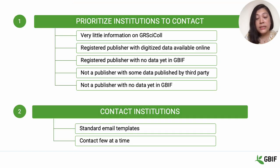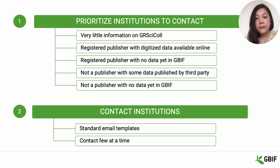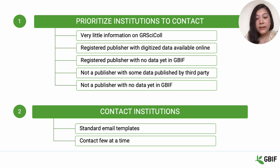The next step is to prioritize institutions in order to establish contact. Contacts are made either to verify information or to inquire about their interest in getting their dataset published through GBIF. Some institutions to be contacted first could be those with very little information on GBIF, also requesting them to suggest an edit. Others could be registered publishers who have digitized their collection specimens but not published, or registered publishers who have not started publishing in GBIF. Likewise, institutions that are not yet a publisher but have potential collection data could also be contacted early on.